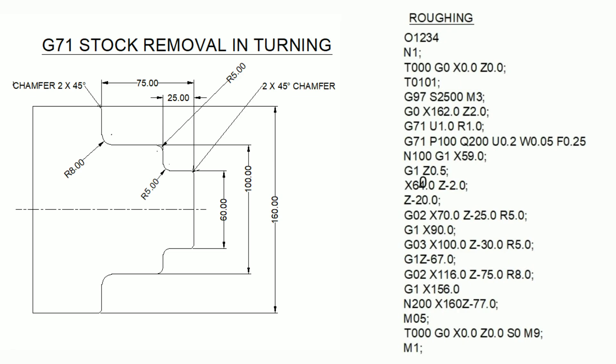N100 G1 X59 — our minor diameter is 60, so I give X59. The next line is Z0.5, a positive value, starting from a 0.5mm gap — that's why I gave X59. N100 is the starting block number. Then the next line is X60 Z-2, which cuts the 2mm chamfer.